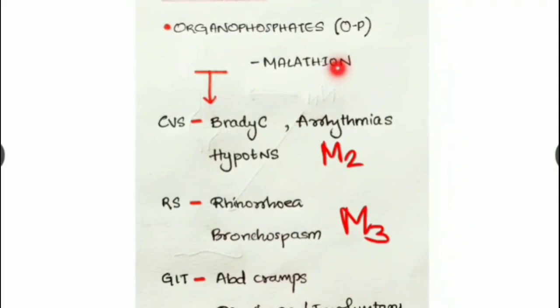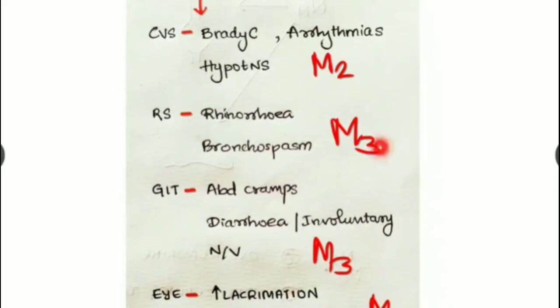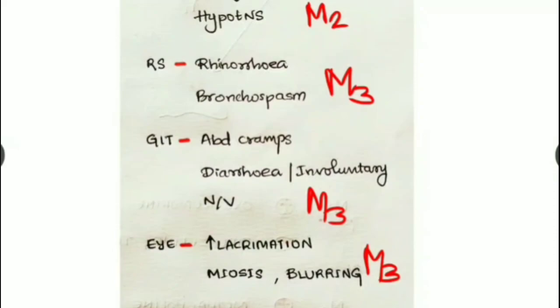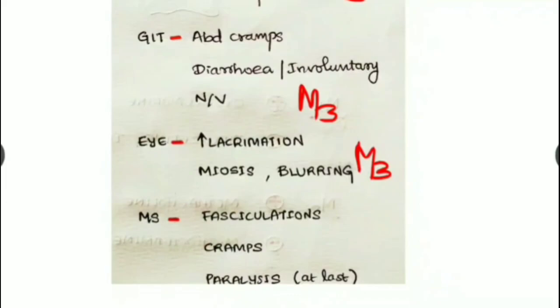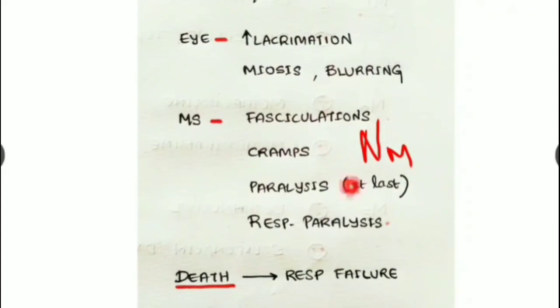In organophosphate poisoning, high ACh concentration acting on M2 receptors causes bradycardia, arrhythmia, and hypotension. Acting on M3 receptors in the respiratory system causes rhinorrhea and bronchospasm. At the GIT, increased ACh on M3 receptors causes abdominal cramps, diarrhea, involuntary passage of stools, nausea, and vomiting. In the eye, it causes increased lacrimation, miosis, and blurring of vision. ACh action on NM receptors causes fasciculations, cramps, paralysis, and respiratory paralysis. Death usually occurs by respiratory failure.